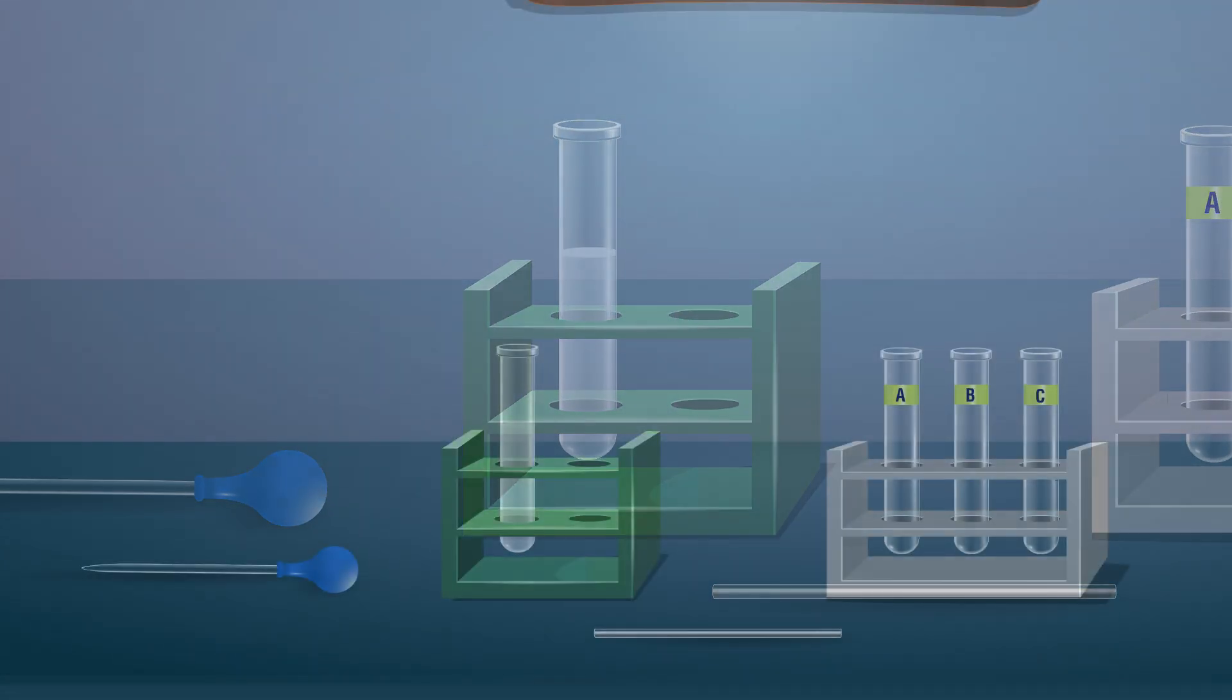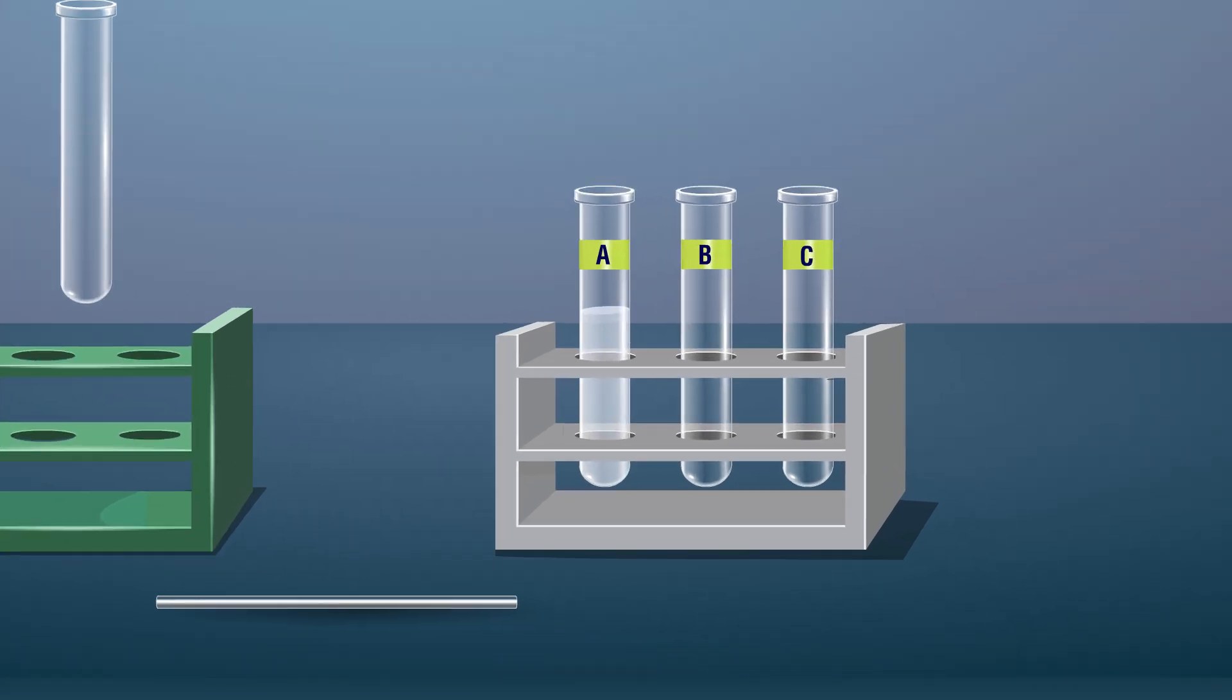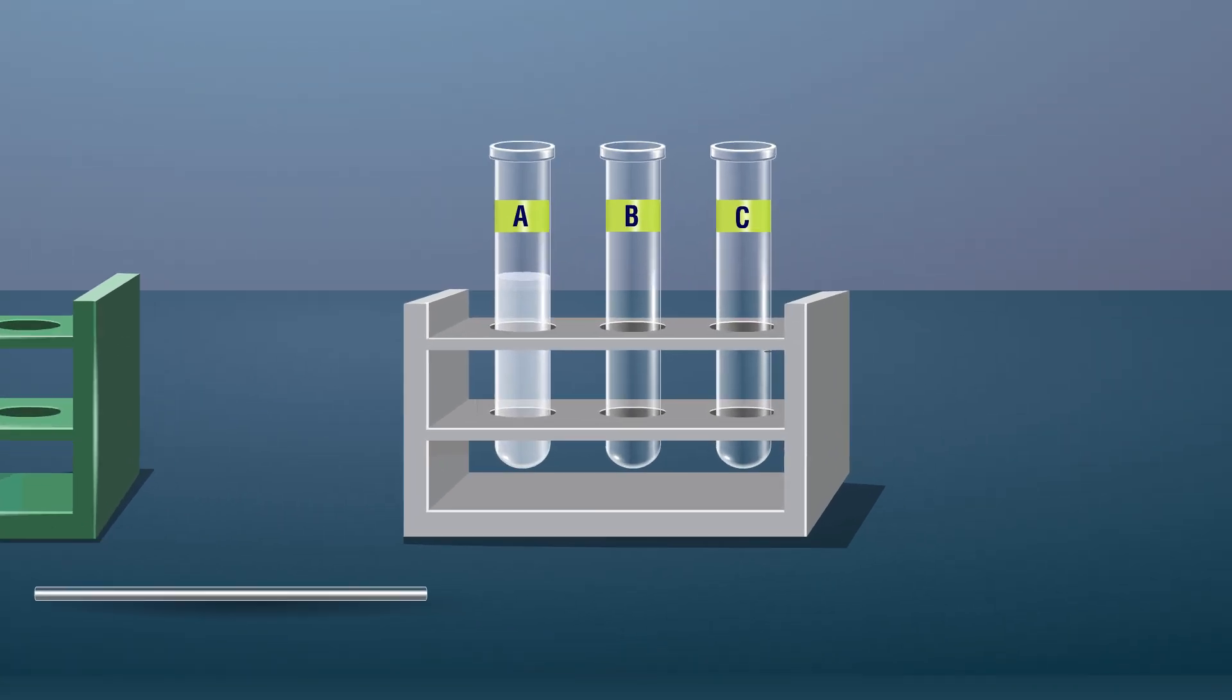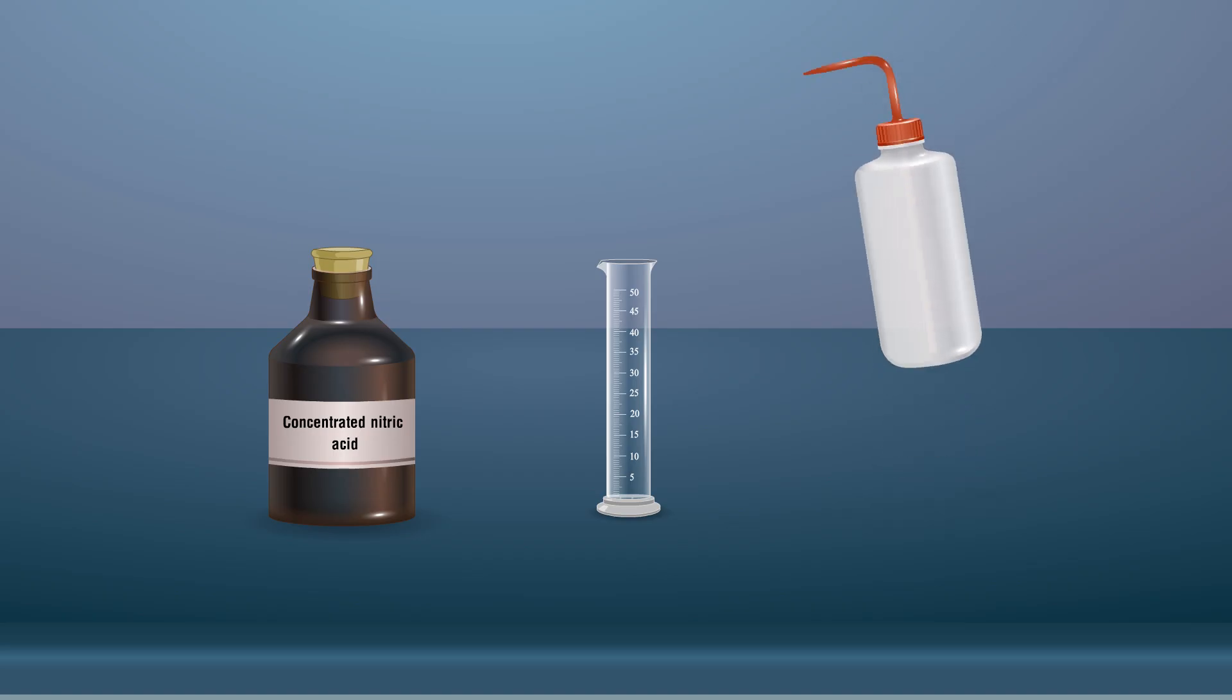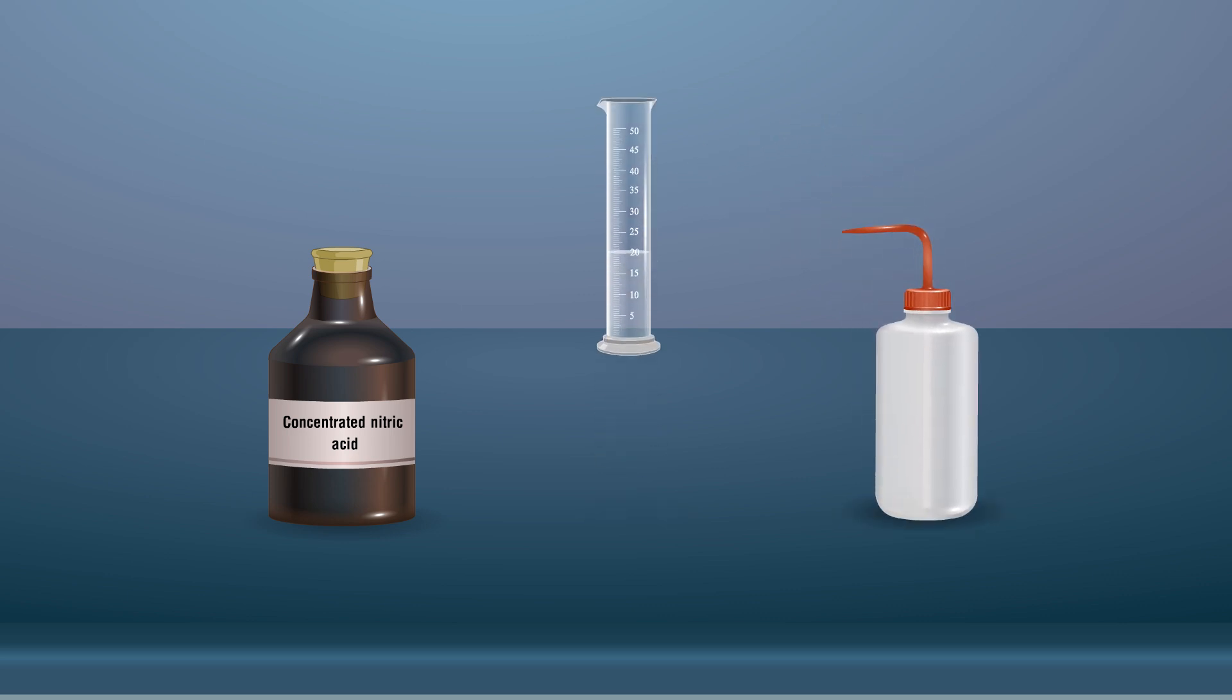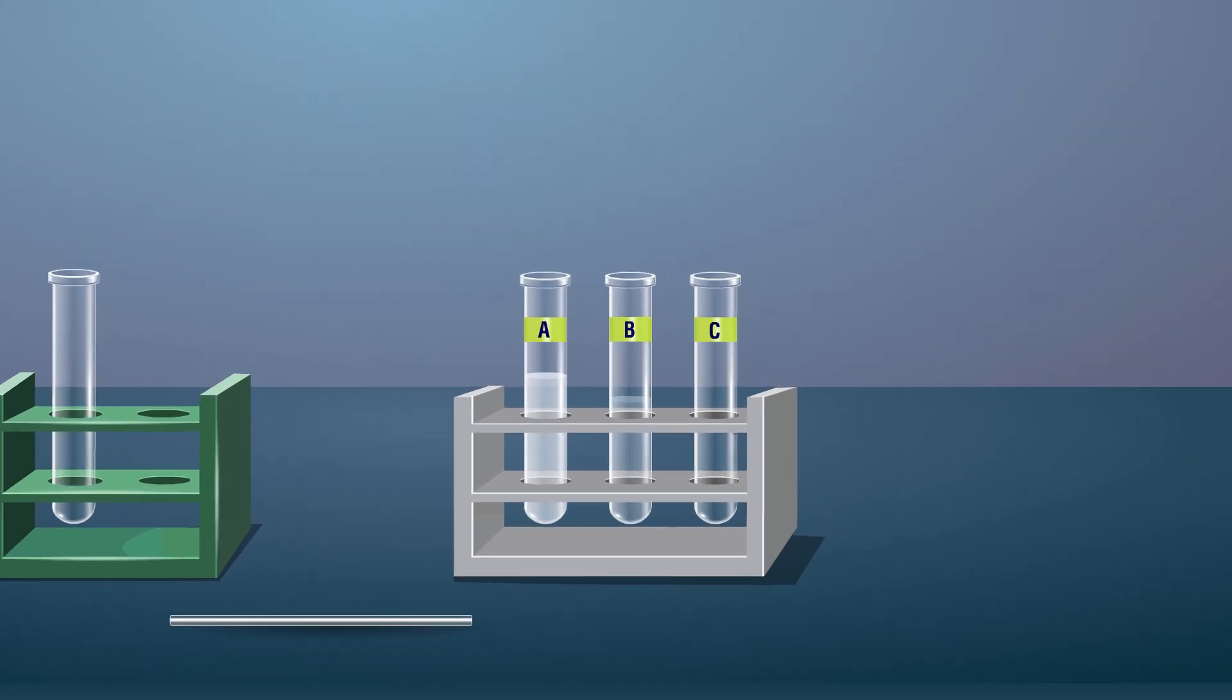Transfer the contents into another clean boiling tube. Label this boiling tube as tube A. Preparation of true solution: take about 20 milliliters of distilled water in a clean boiling tube. Add approximately 1 to 2 grams common salt.